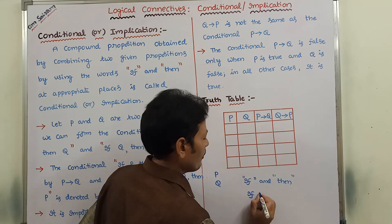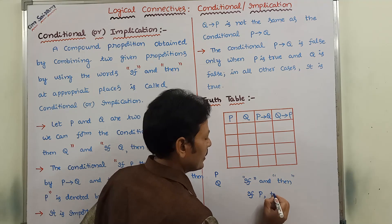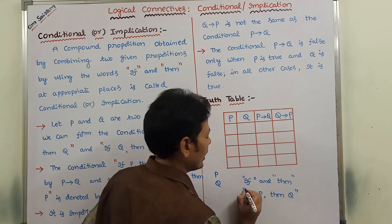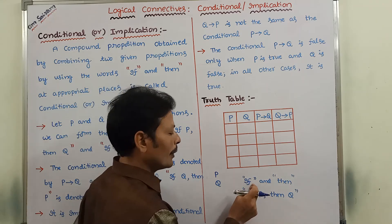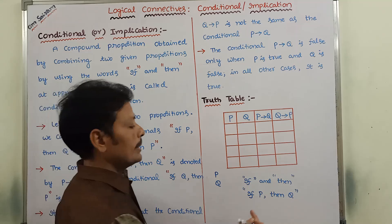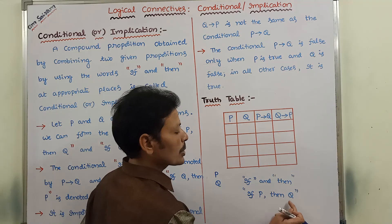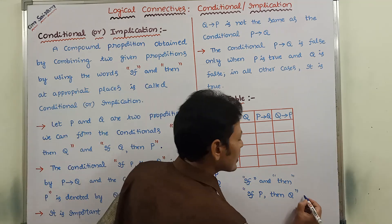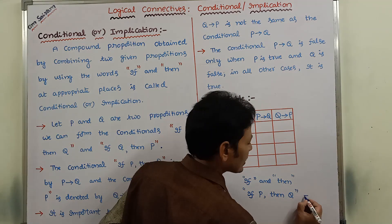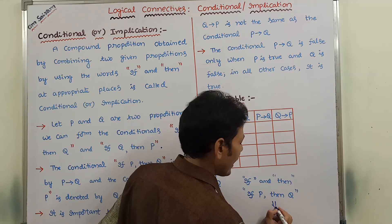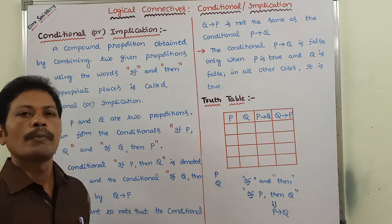IF P, THEN Q. This is one way. That means, IF word can be used before the first proposition, and THEN word can be used between the two propositions. It can be symbolically represented as P Conditional Q.